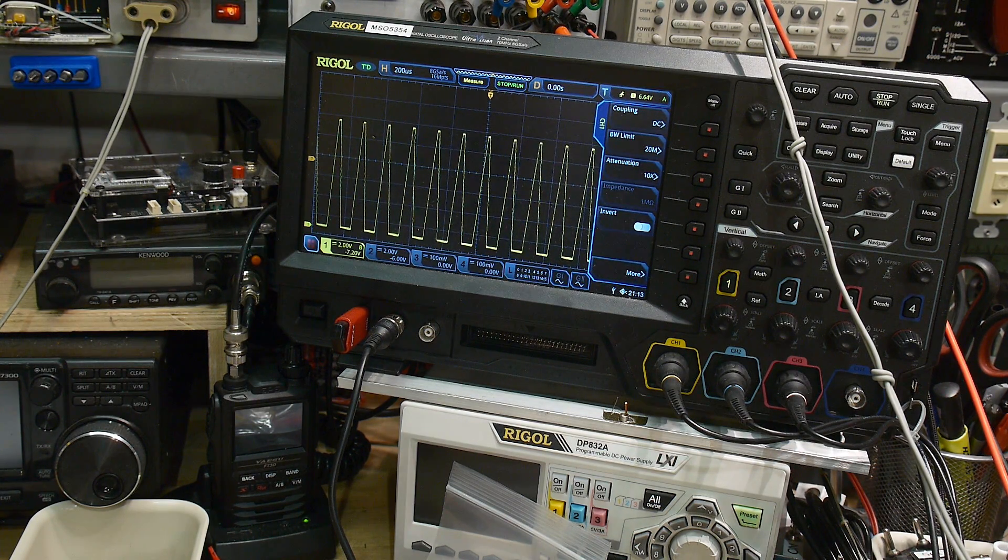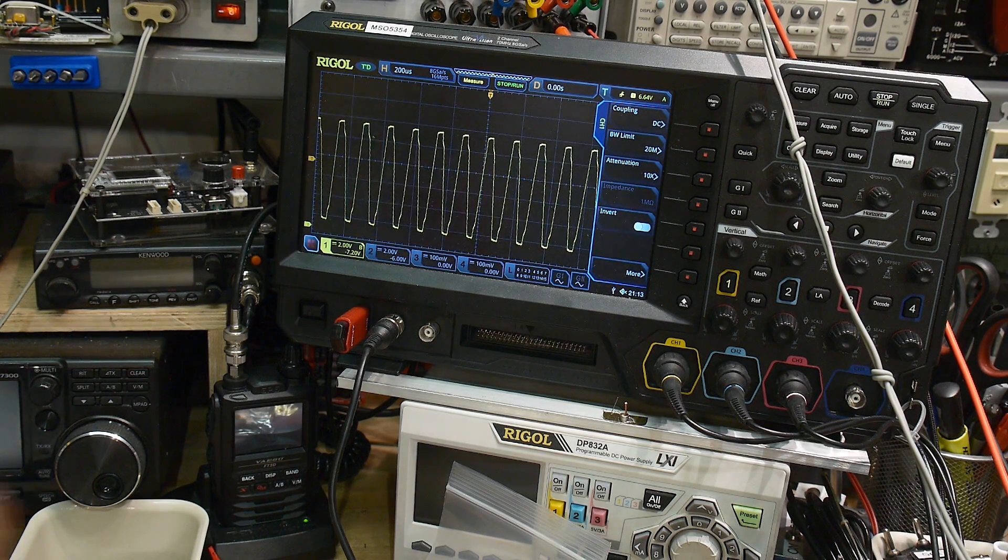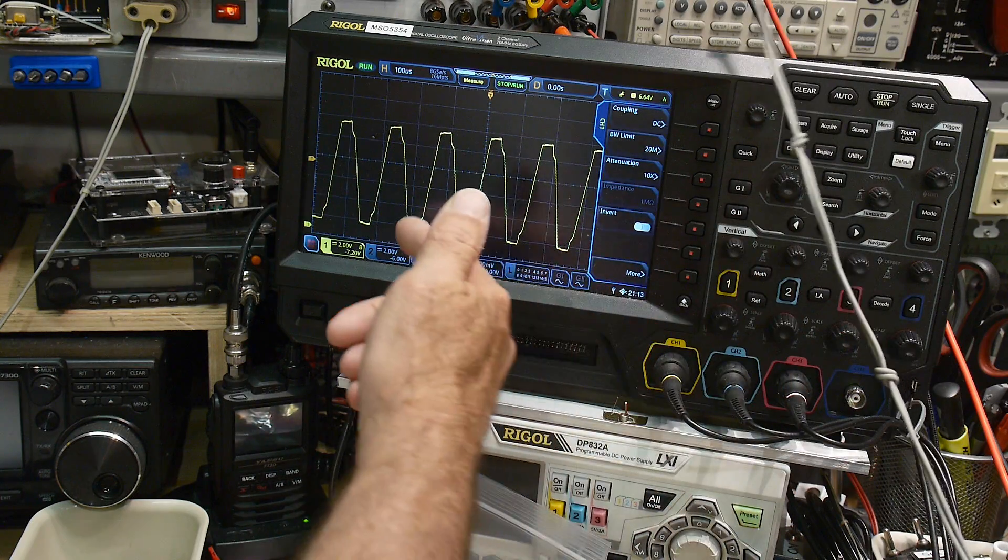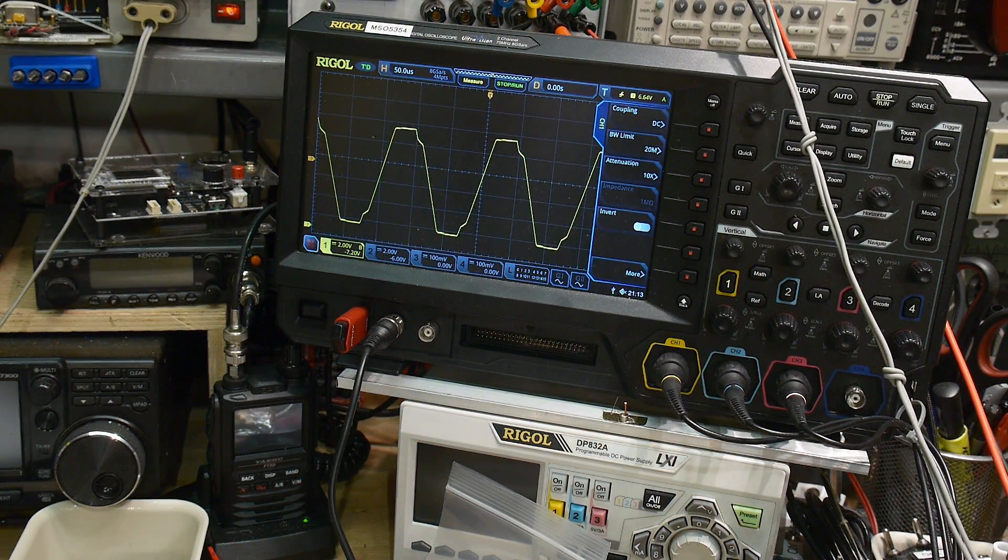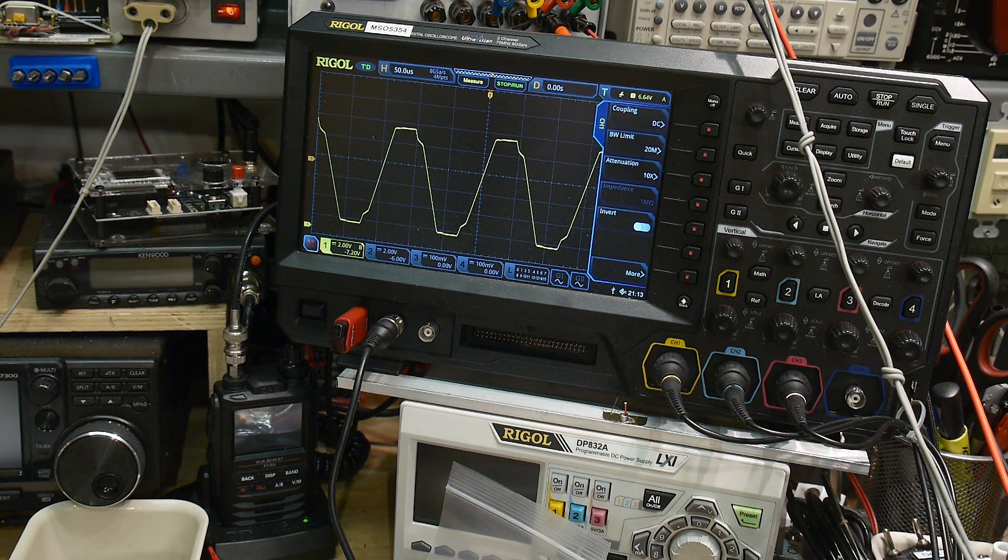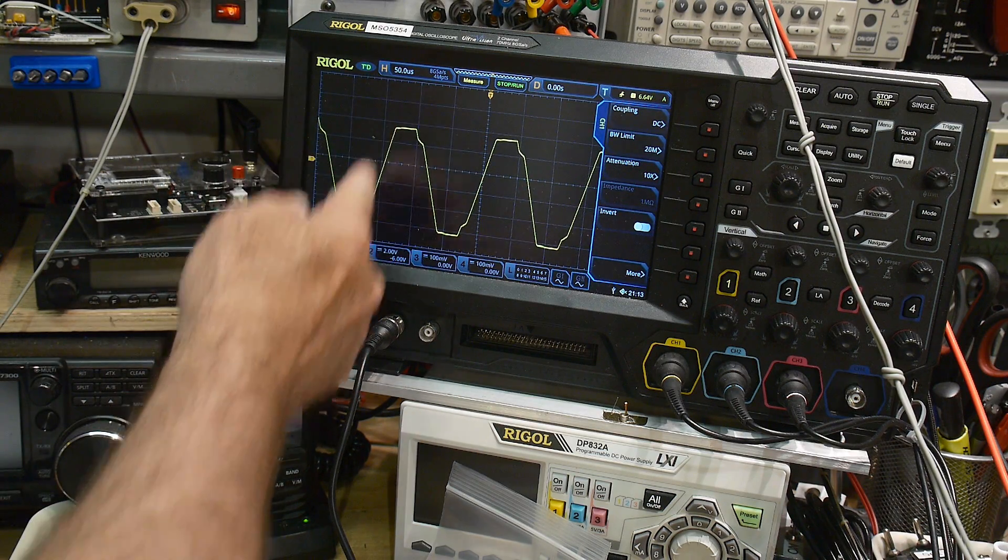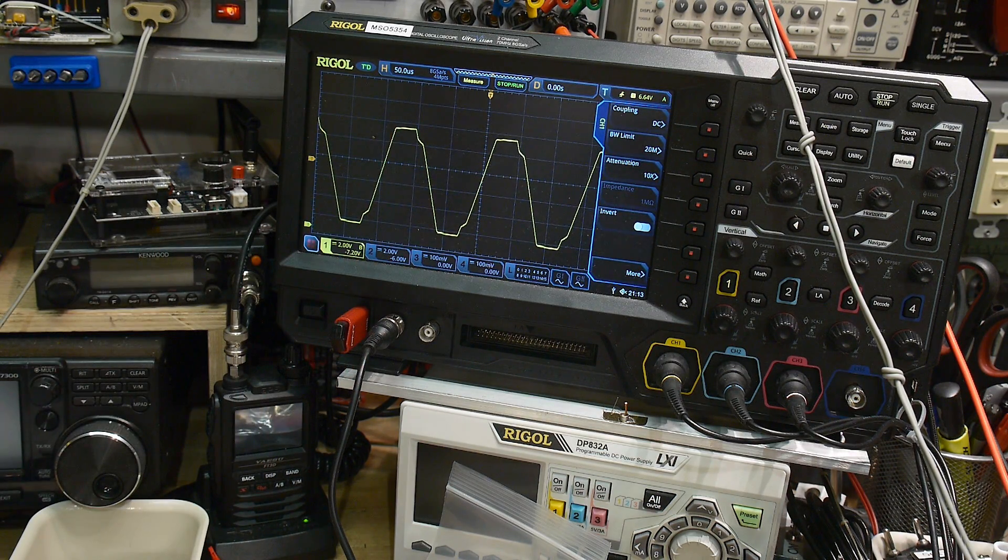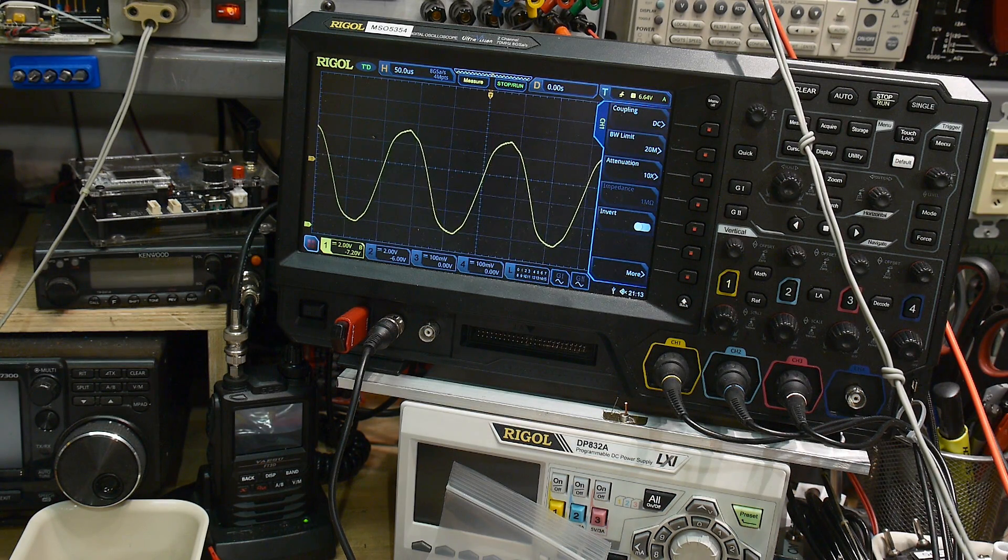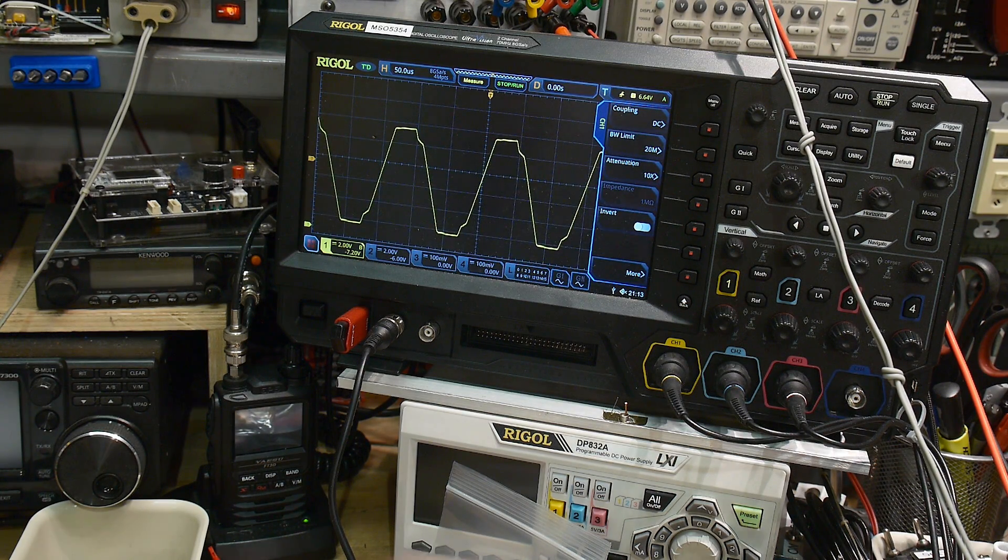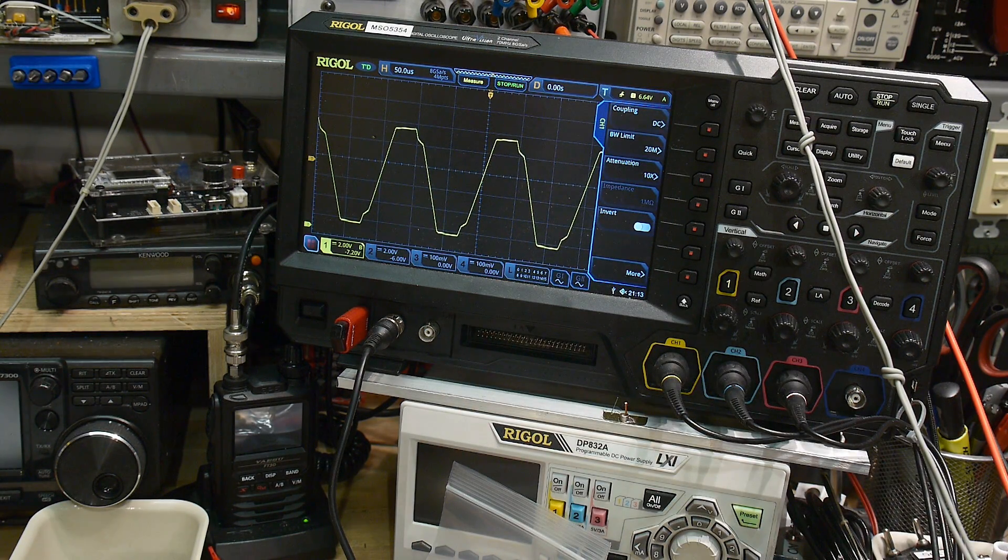If you probe around in the circuit, you'll start to find maybe some clues. Whenever you see a straight line at a pretty big angle, that's a really good indication that you're probably slew rate limited, because capacitors don't give you a straight line - they give you a roundy bit. If you see straight lines at an angle, that's slew rate limitations of the op amp.